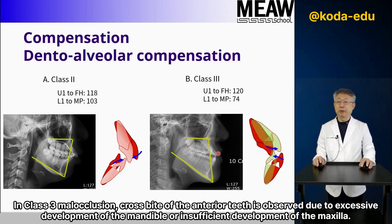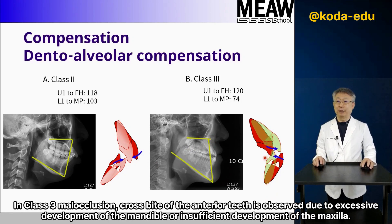In Class 3 malocclusion, crossbite of the anterior teeth is observed due to excessive development of the mandible or insufficient development of the maxilla.